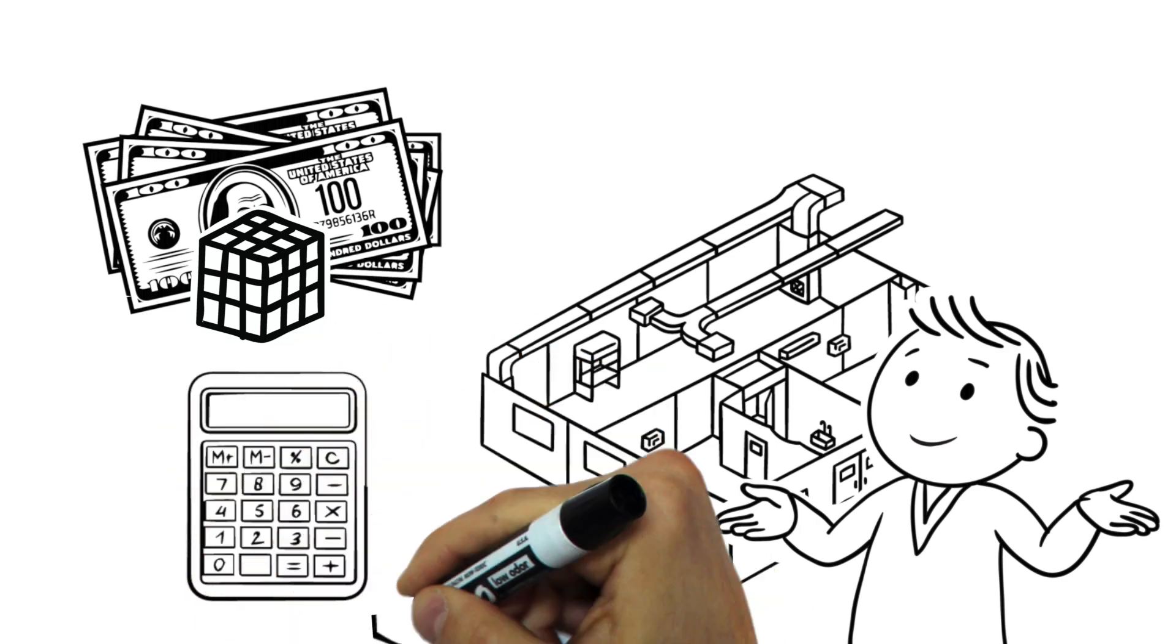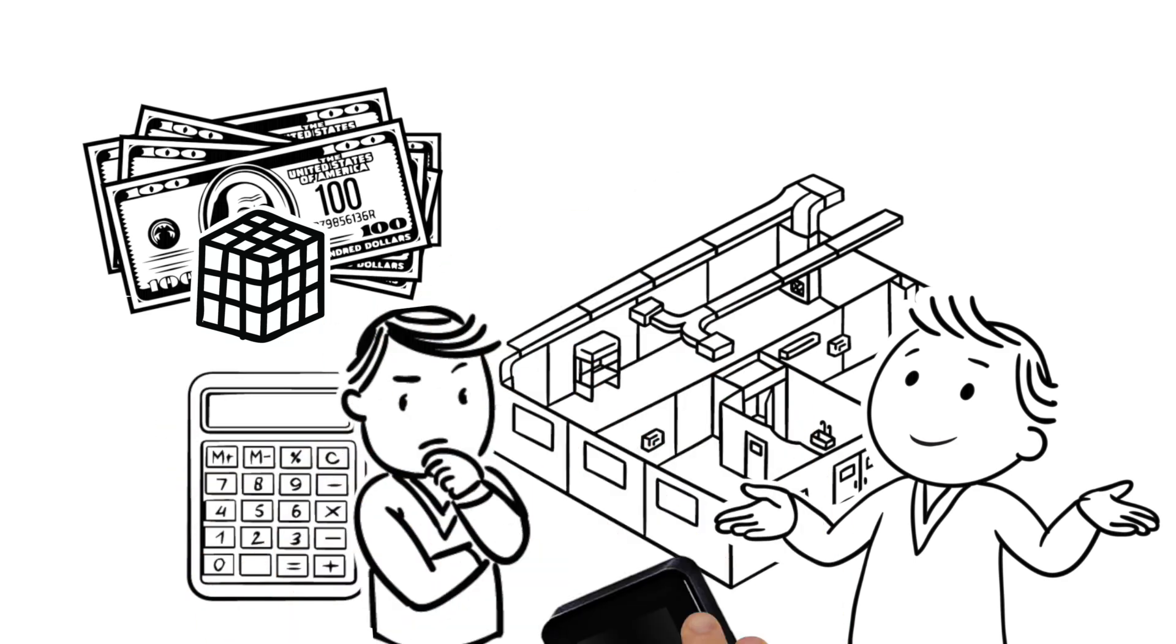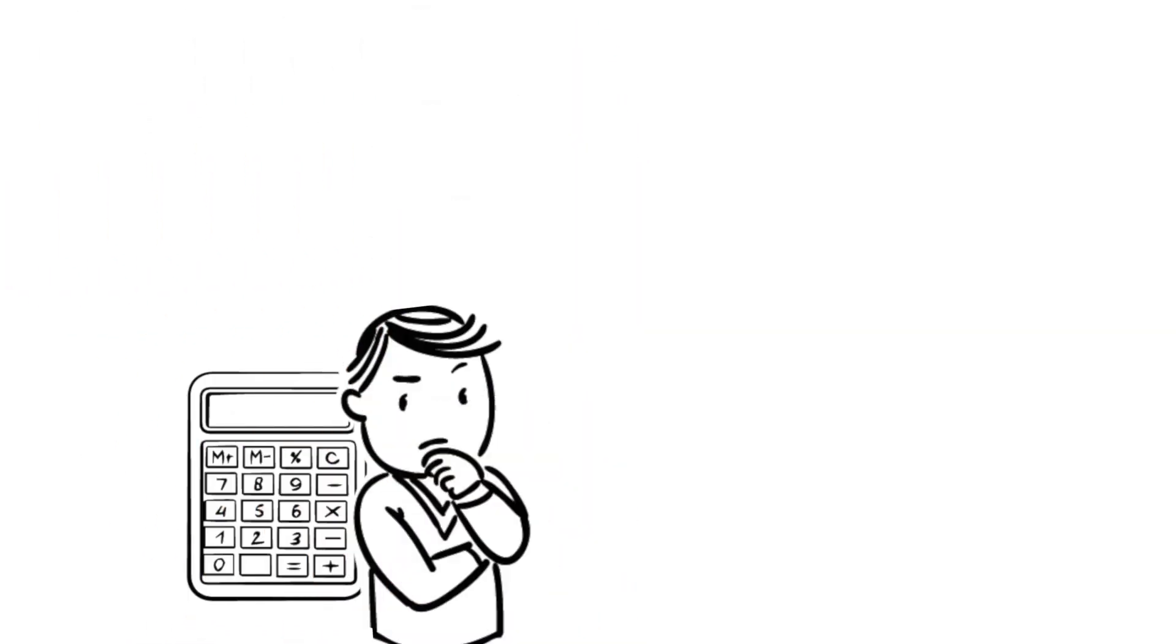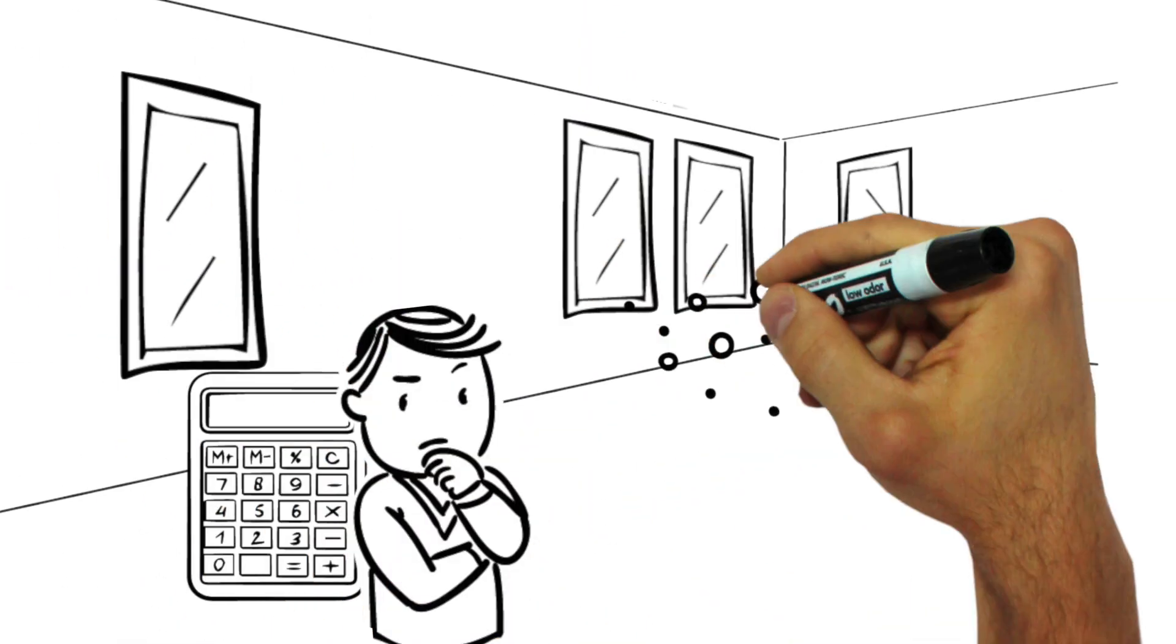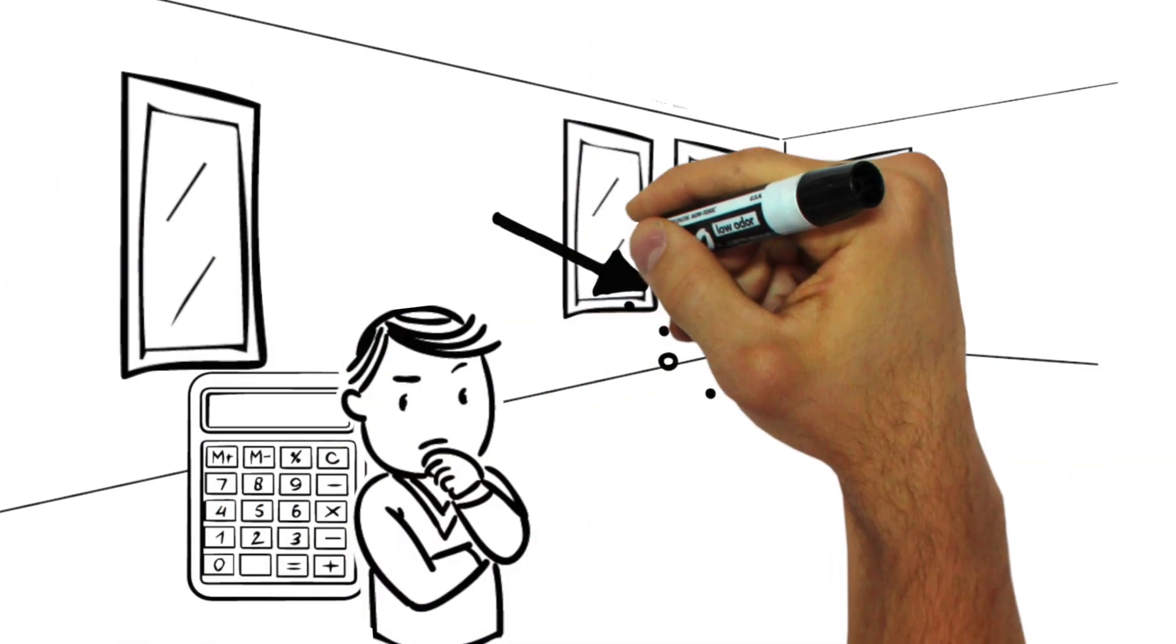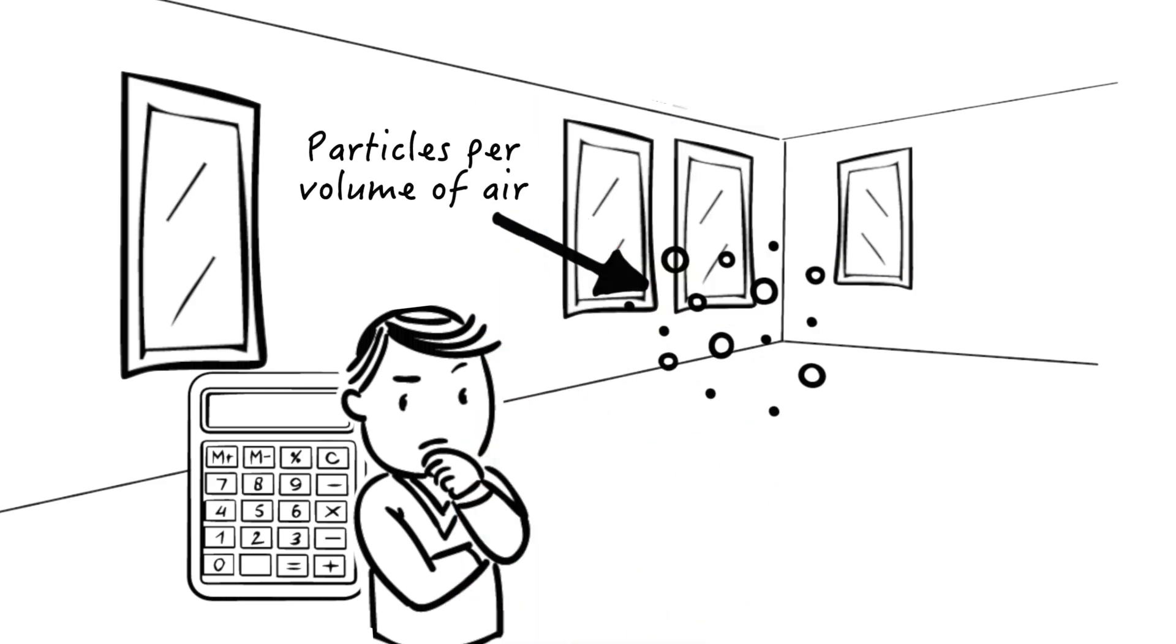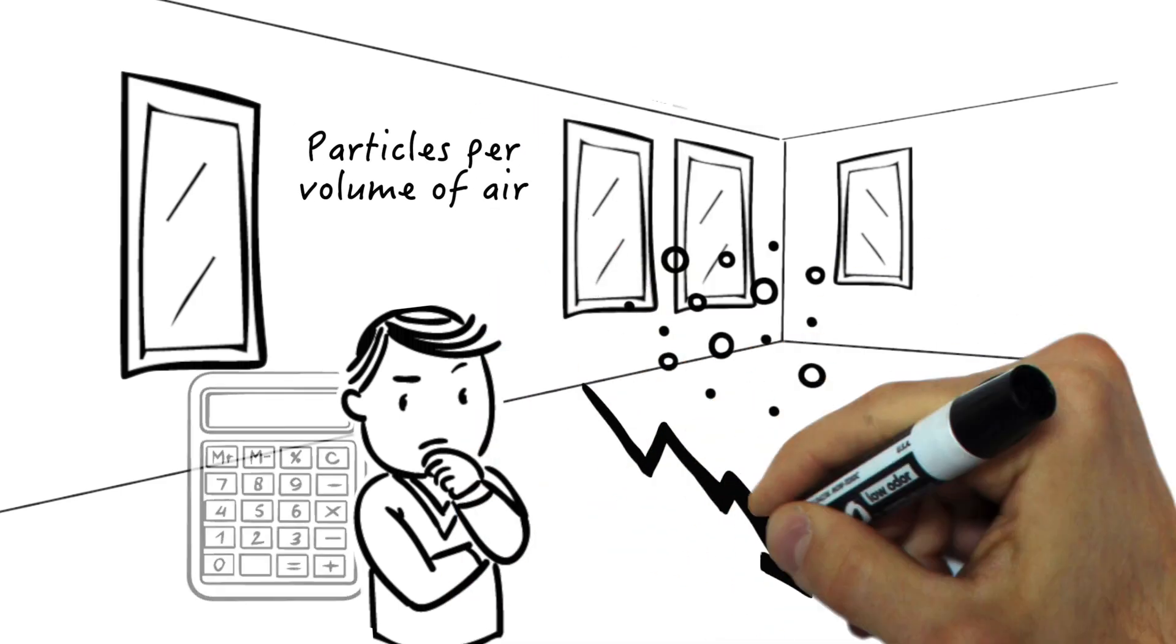It's difficult to give an exact answer because calculations need to be done. Clean room classes are based on the number and size of particles allowed per volume of air. For example, the bigger the room, the lower the cost per square foot.